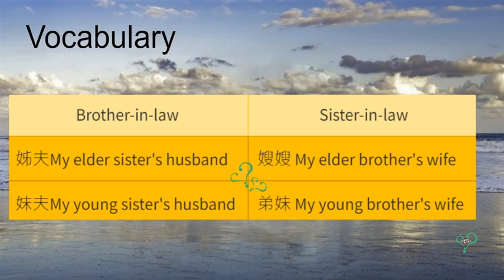Brothers-in-law: 姐夫 is my older sister's husband; 妹夫 is my younger sister's husband. Sisters-in-law: 嫂嫂 is my older brother's wife; 弟妹 is my younger brother's wife.